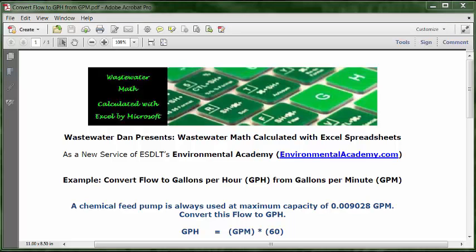Today's example: convert flow to gallons per hour GPH from gallons per minute GPM. Today's problem reads: a chemical feed pump is always used at maximum capacity of 0.009028 GPM. Convert this flow to GPH.